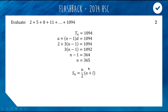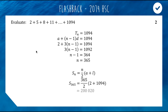So we can do n over 2 — n is 365, first and last are 2 and 1094. Put that through the calculator and we get 200,020 as the sum of this series.